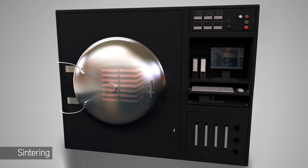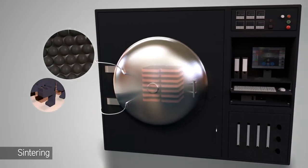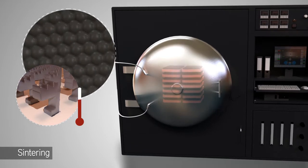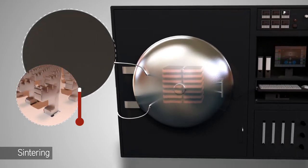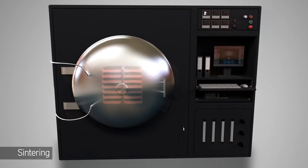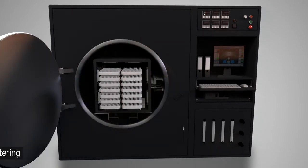The final step of the MIM process takes place in the sintering furnace. This furnace operates at a temperature just below the melting point of the metal material that is used. The metal powder fuses together resulting in an object with a density that is higher than 99% solid.